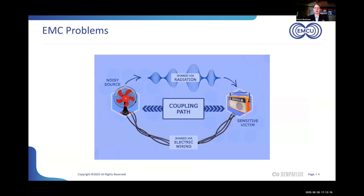I always like to start with what I call the EMC fire triangle — even though my fire triangle looks more like an oval. A lot of us learned as kids that to have a fire, you need three things: fuel, a heat source, and oxygen. If you take away one of those, you put out the fire. Well, to have an EMC problem, you also need three things: a noisy source, a sensitive victim, and a coupling path between them.